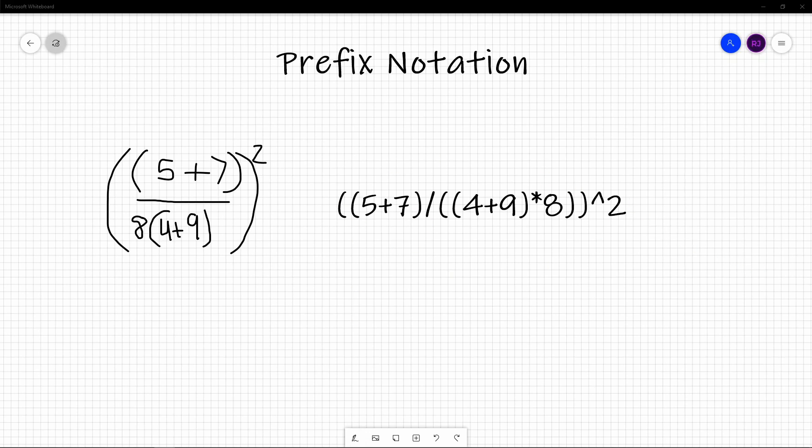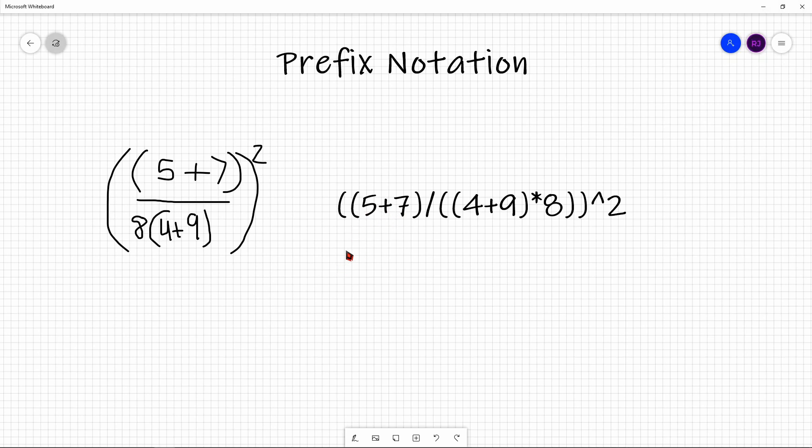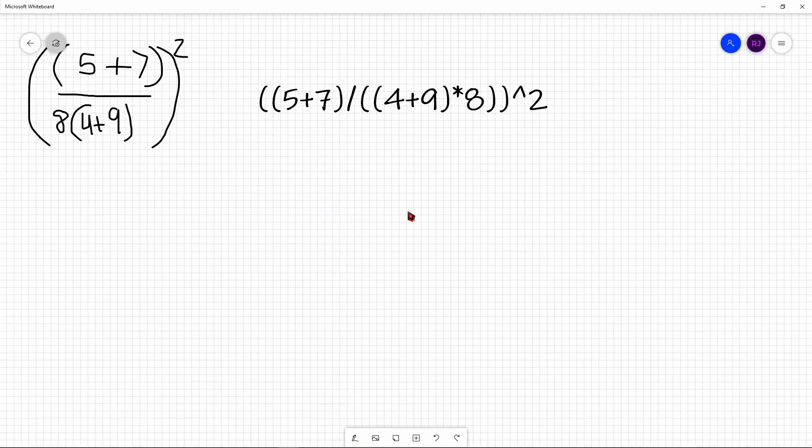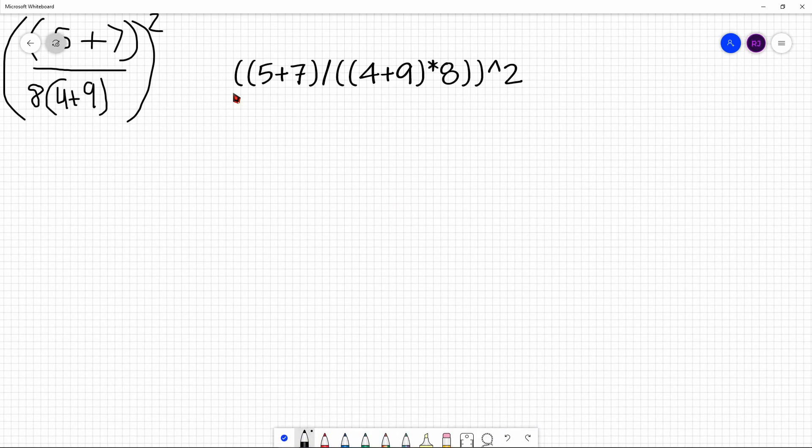For this expression, let's figure out what the prefix notation is. What's the first thing you would do here? Well, I would take 5 and 7, and I'm adding them. As I mentioned earlier, in prefix, the operator is put before the operand. So, let's convert that part. This would be plus 5, 7. I just converted this tiny section over. Now, let's look at the next thing you would do. What's the next thing you would do? Well, you would do 4 and 9. You would do the addition. So, let's write that down. Plus 4 and then 9.